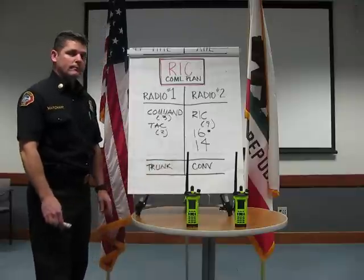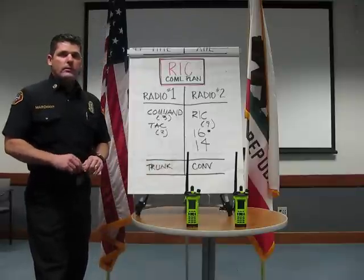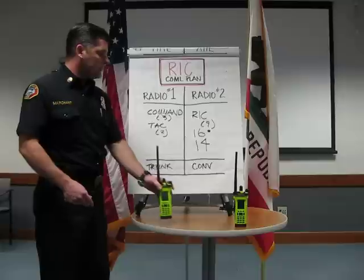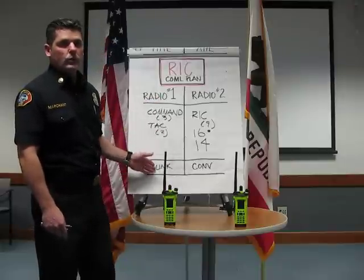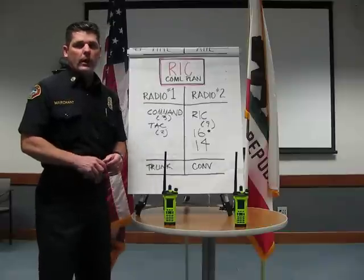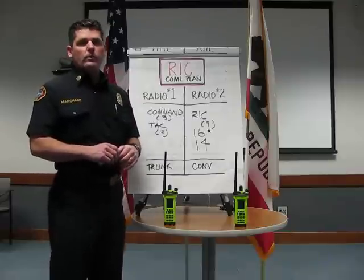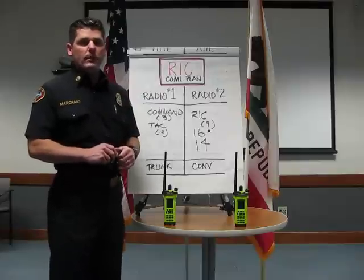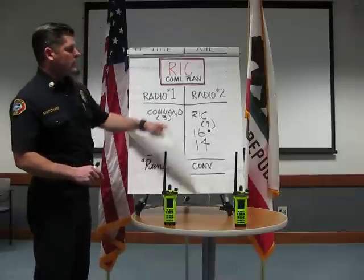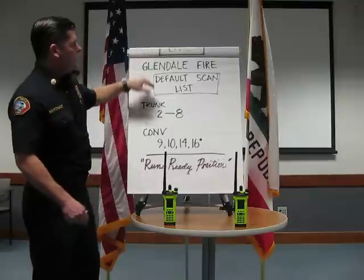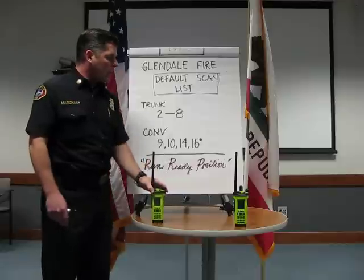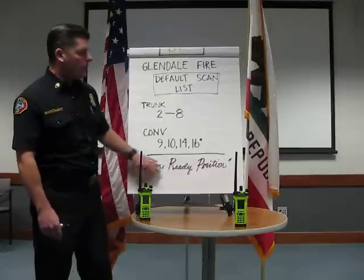Here's your comm plan. The last piece is how quickly, when assigned Rapid Intervention, can you get both radios on the RIC comm plan — one trunked, one conventional? How quickly can you adjust or customize your scan list? This is a perishable skill that we need to practice on a daily basis. One way to do this very quickly is to establish our organization's default scan list — how we keep our radios in a run-ready position.